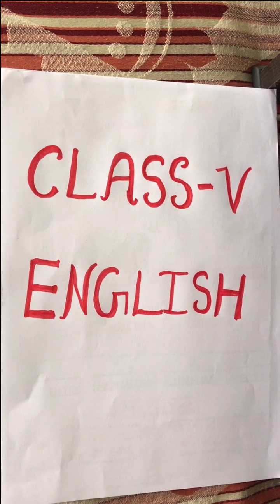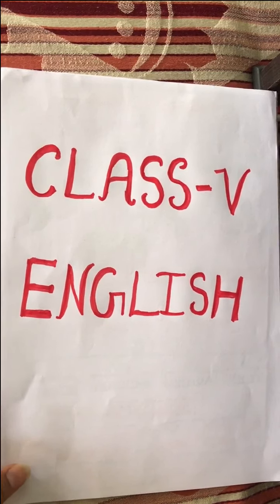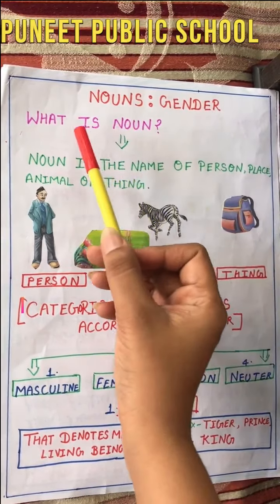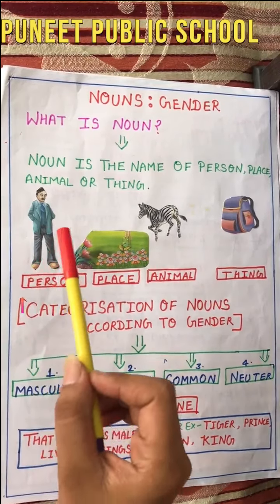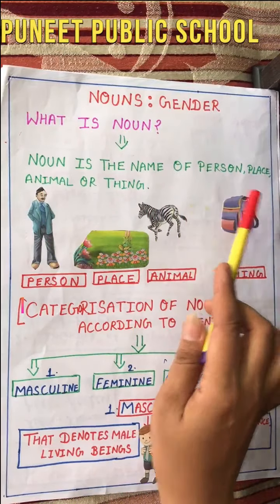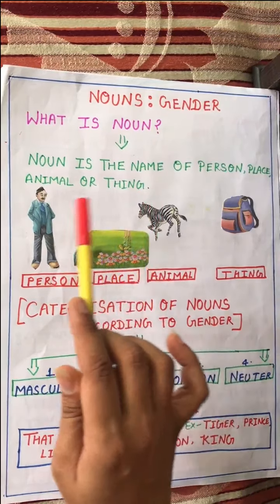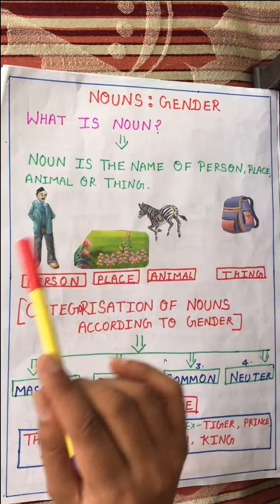Good morning, dear students. How are you? I hope you all are good. Today we are going to learn about a new grammar topic called noun gender. First of all, we should know what a noun is. A noun is the name of a person, place, animal, or thing, as you have studied in the previous videos. Noun kisi bhi person ka name, place ka name, animal ka name, ya phir kisi thing ka name hota hai.